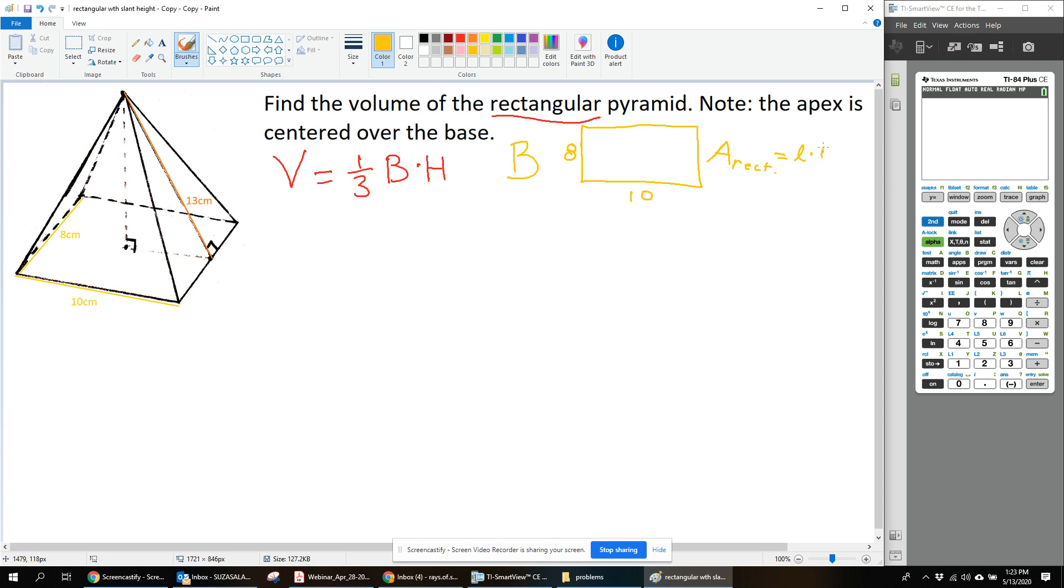is length times width. So my base is 8 times 10, which equals 80. The unit is centimeters, and since it's area, it's centimeters squared because centimeters times centimeters is centimeters squared.